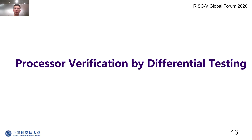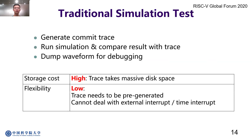In the second part of this talk, I'll give a brief introduction about the online differential testing framework we used in processor verification. In a traditional simulation test, we first generate a commit trace using an emulator or a proven correct processor. Then we run simulation and compare register file write-back results with the commit trace. Usually, waveforms are dumped in this process for debugging. However, pre-generated trace will cause several problems. First, massive disk space is used to store these traces, and if we are going to run Linux in simulation, storing these traces will be very costly. Secondly, if we use pre-generated traces, we cannot deal with external interrupts and timer interrupts, as they will cause the processor's behavior to differ from the pre-generated trace.